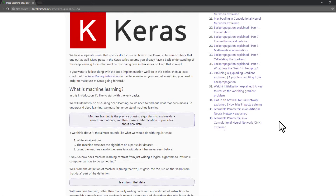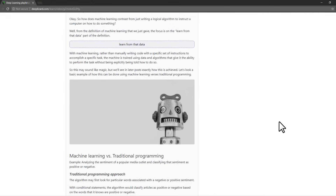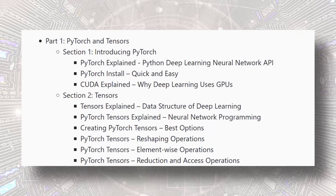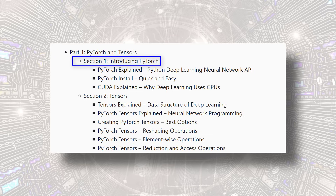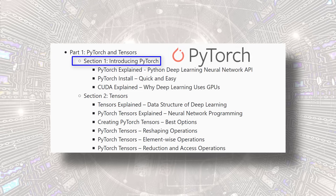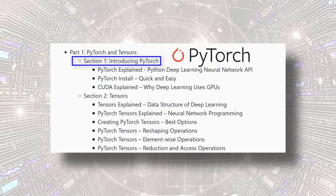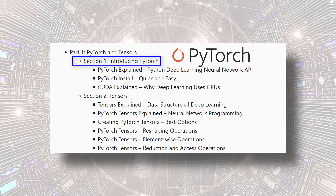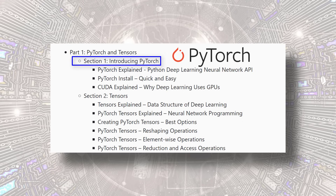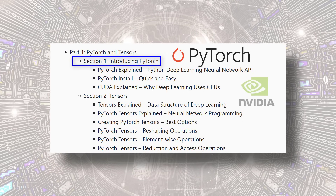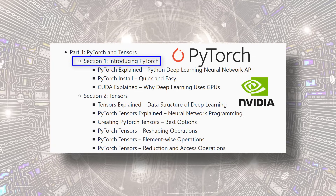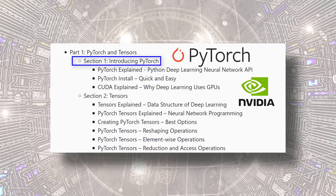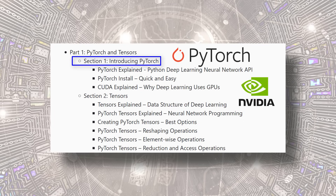To kick the series off, we have two parts. Part one of the neural network programming series consists of two sections. Section one will introduce PyTorch and its features — importantly, we'll see why we should even use PyTorch in the first place. Additionally, we'll cover CUDA, a software platform for parallel programming on NVIDIA GPUs. If you've ever wondered why deep learning uses GPUs in the first place, we'll be covering those details in the video on CUDA.